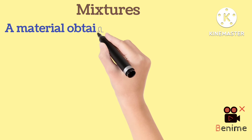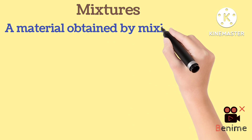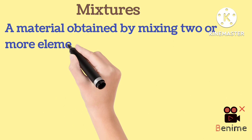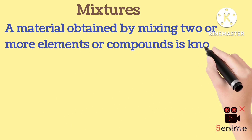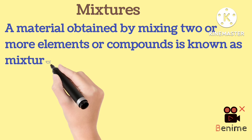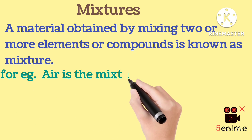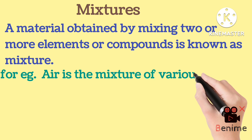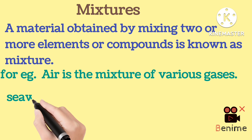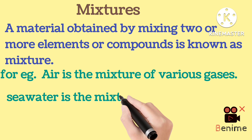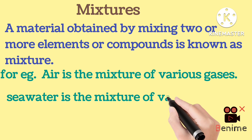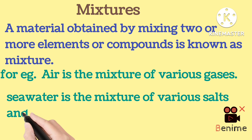A material obtained by mixing two or more elements or compounds is known as a mixture. For example, air is a mixture of various gases, and seawater is a mixture of various salts and water.